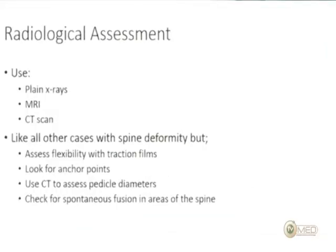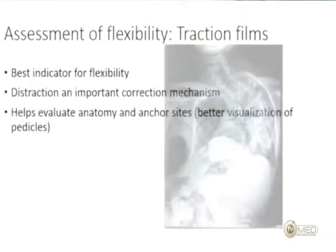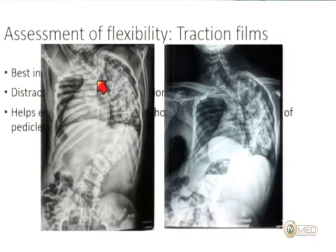Regarding radiological assessment: full-length X-rays, bending films, CT and MRI to look at anchor sites and rule out abnormal cord tethering or diastematomyelia. Traction films are very important — they show the best degree of flexibility possible and, since traction is a mechanism of correction, they also help assess anatomy at anchor sites. On a standing X-ray you can barely see the anchor anatomy, but traction films reveal much more.